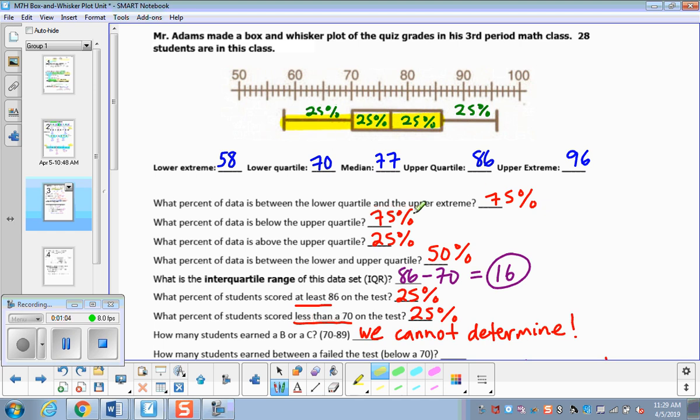What percent of the data is above the upper quartile? So above the upper quartile is that 25 percent. What percent of the data is between the lower and upper quartile? So the lower quartile and the upper quartile is the box part, which is 50%.